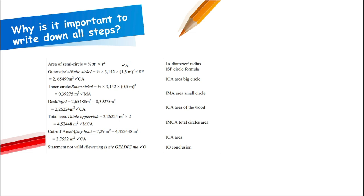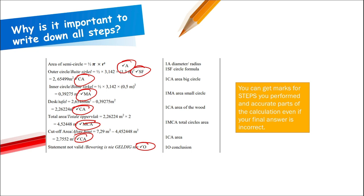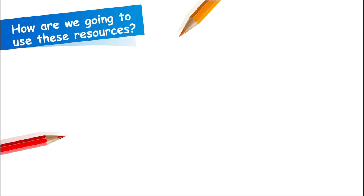Writing down all your steps is very important because you get marks for every single step. Even if your final answer is not correct, you can still get five out of six or four out of six marks. Don't just write the final answer — show the marker how you arrived at your answer. Now let's look at how to best use this platform's resources.